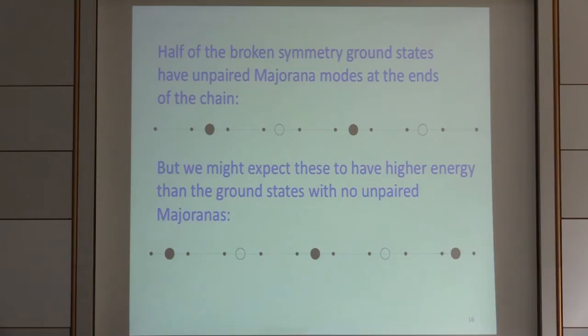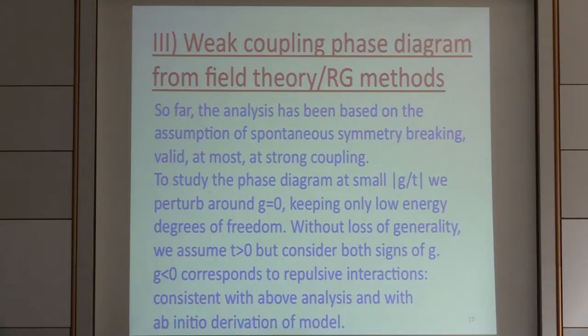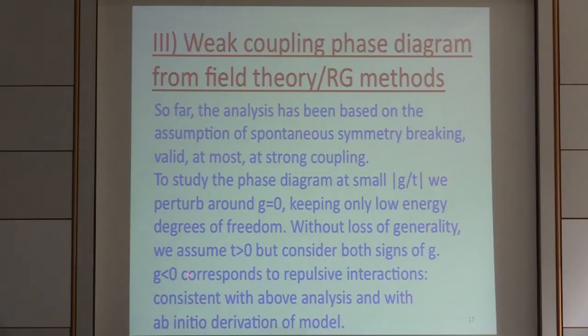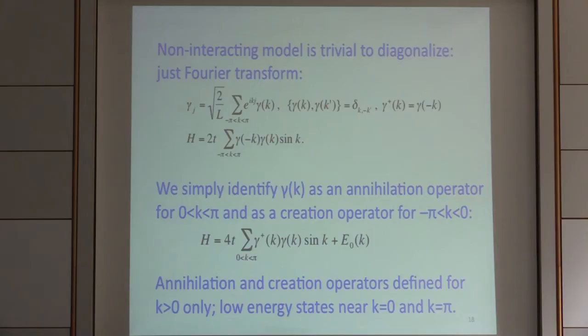So far I've been speculating about spontaneous symmetry breaking which we believe happens in the strong coupling limit. Now let me go back to the opposite extreme — solving the model for weak coupling. Without loss of generality, I take T positive and consider both signs of G. The idea is to perturb in the limit of weak interactions. It turns out G less than zero corresponds to repulsive interactions and G greater than zero to attractive interactions.